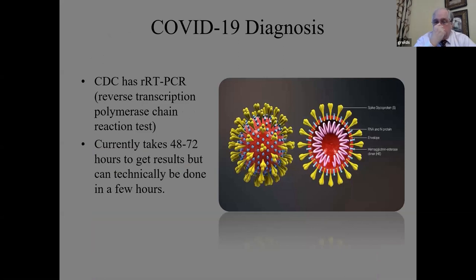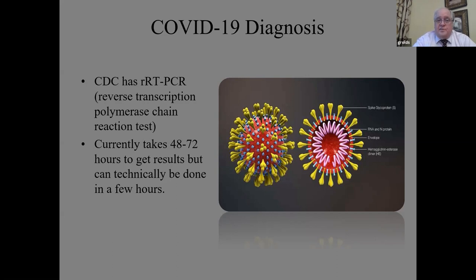Because of previous experience with MERS and SARS, we were able to relatively quickly develop a rapid test — a reverse transcriptase polymerase chain reaction (RT-PCR) test — now available in several countries. Through the CDC, it is available in about 48 to 72 hours, though it's technically possible to run it in a matter of hours if testing can be done in more diverse settings. We have the technology to make the diagnosis of COVID-19 relatively rapidly, but we need to ramp up the ability to generate a lot of tests. Korea is currently testing over 1,000 people a day, so obviously we're going to need much greater testing capacity in the very near future.